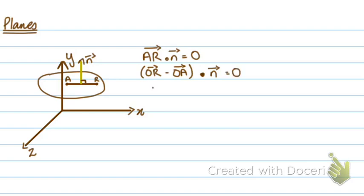I can write this as (R minus A) dot the normal equals zero. And now simply R dot N minus A dot N equals zero. Finally, I get my vector equation: R dot N equals A dot N. This is the vector equation of the plane, not the line.